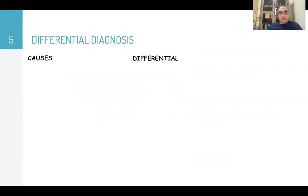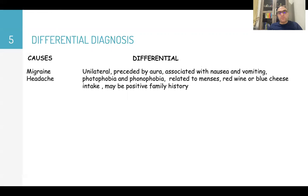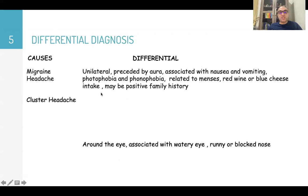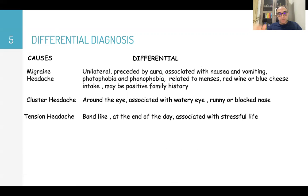As differential diagnosis: migraine is unilateral, preceded by aura, associated with nausea, vomiting, photophobia, and phonophobia; sometimes related to menses, red wine, or blue cheese, with a positive family history. Cluster headache is usually around the eye with watery eye and runny or blocked nose. Tension headache is band-like, occurring at the end of the day and associated with stressful life.